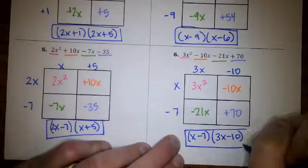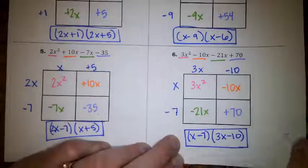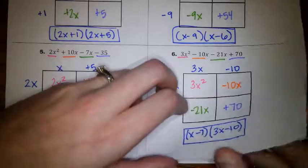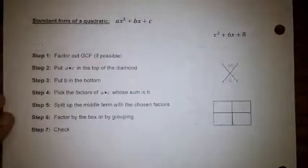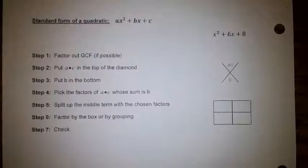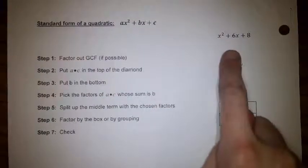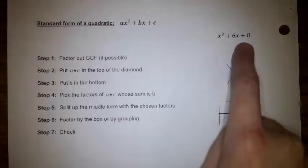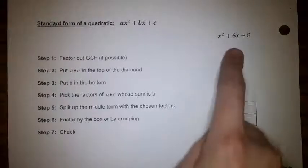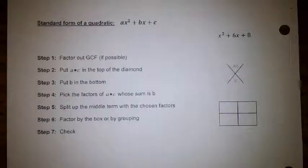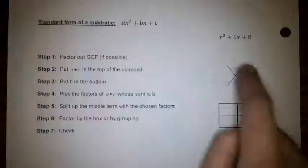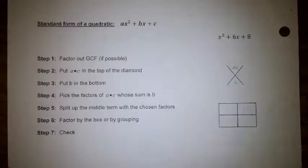That is how we factor using the box method. Now we're going to move on to something a bit more difficult — we're going to flip over to page 4. On this page we're given a quadratic equation, x squared plus 6x plus 8, and we have to factor it. Previously our problems were already split into four terms. Now we're given only three terms, so we'll have to figure out what those four terms are so we can put them in our box.